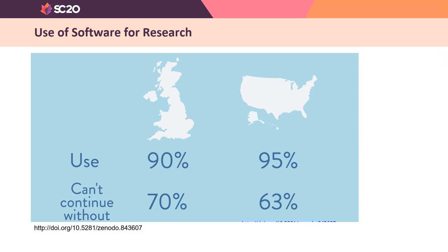Software is crucial for many researchers. The data of the reference survey shows that 95% of researchers in the US answered that they used software for their research, and 63% answered even that they wouldn't be able to do their research without software.